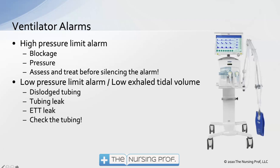The low pressure limit alarm and low exhaled tidal volume often go off at the same time. The ventilator is expecting to feel some pressure and resistance from the patient. If there's no pressure, no resistance, and no exhaled volume, that might indicate the tubing is dislodged. There could also be a tubing leak — maybe the tubing isn't connected well, has a cut in it, or there's a leak in or around the endotracheal tube. Check the tubing.